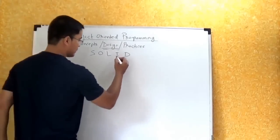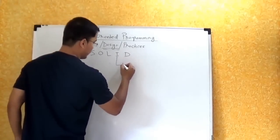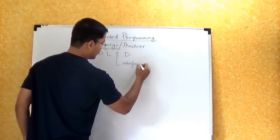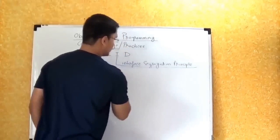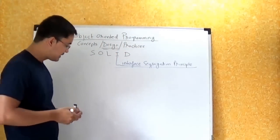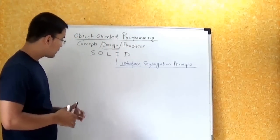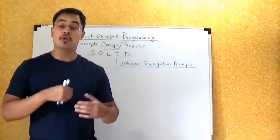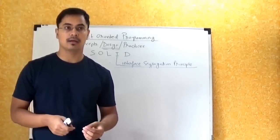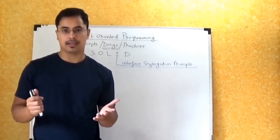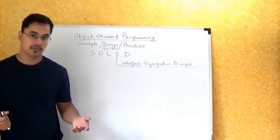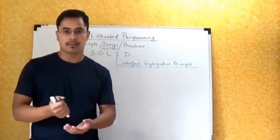So let's now talk about the next principle — the Interface Segregation Principle. What does this principle say? It says that any client should not be forced to implement any interface which is irrelevant to it.